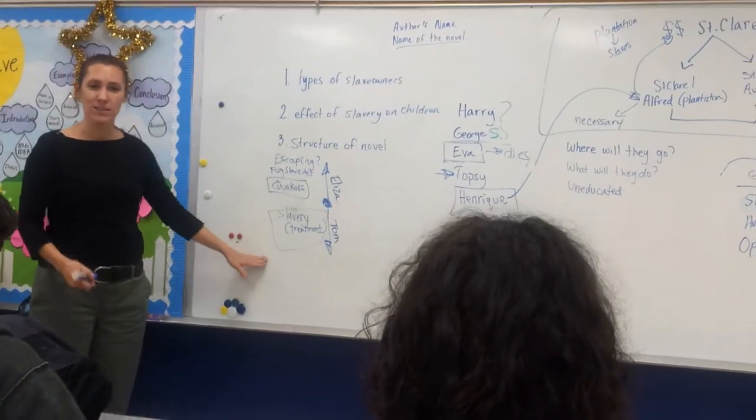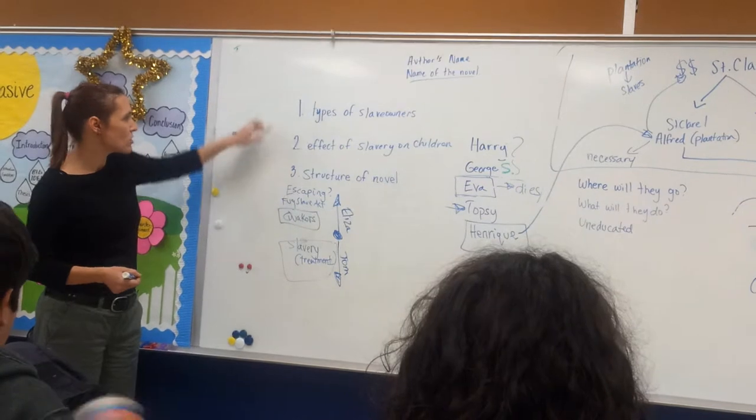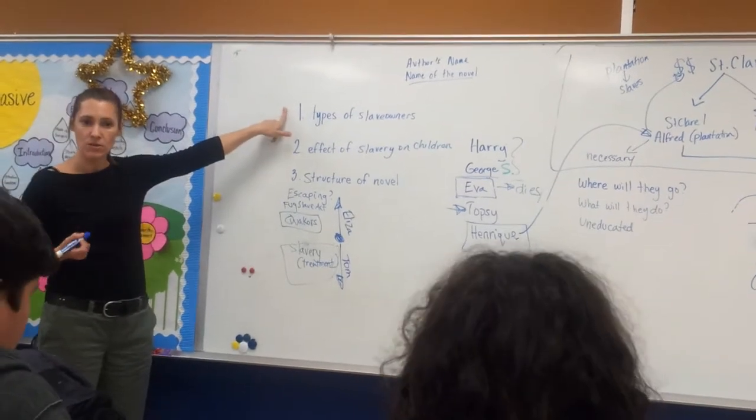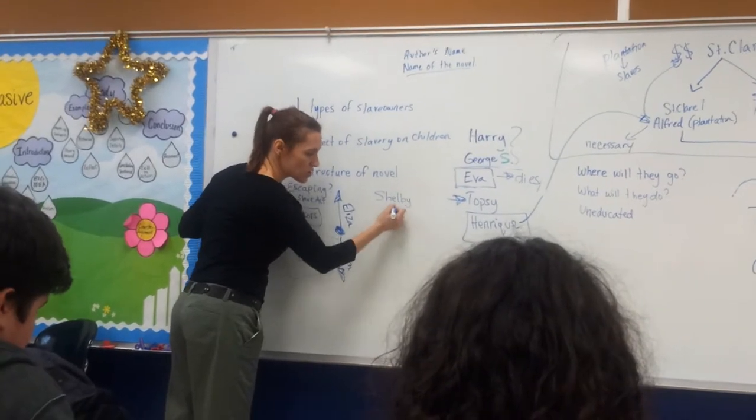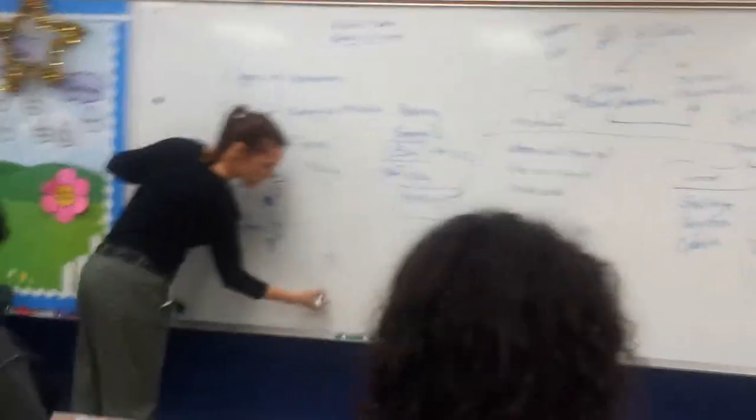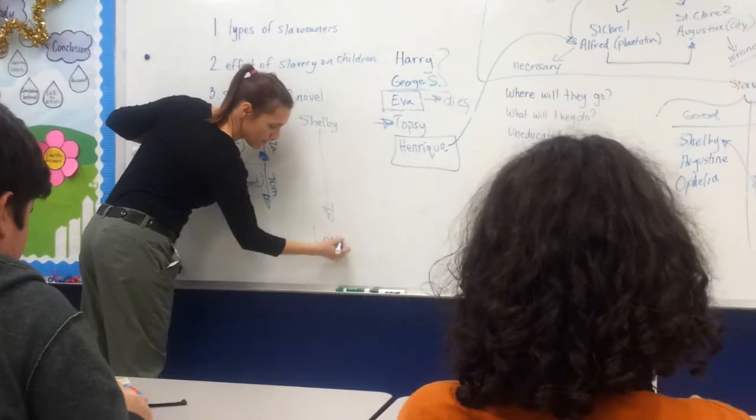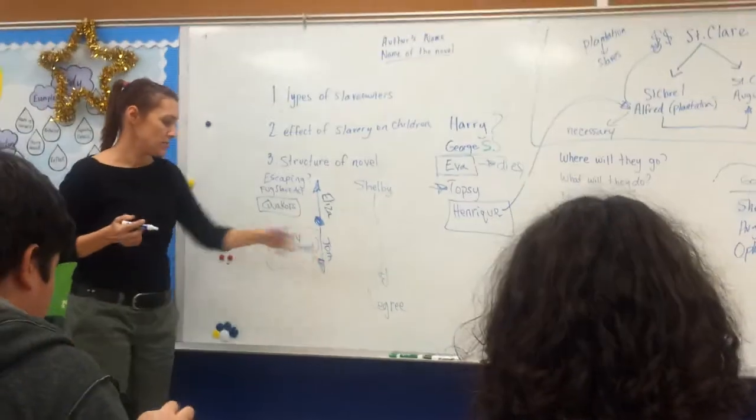That's one way to look at the structure. Another way to look at the structure can be related to the types of slave owners. She intentionally takes you from Kentucky and nice Mr. Shelby to Simon LeGree. So you have to ask yourself, why not start with Simon LeGree?